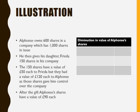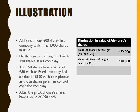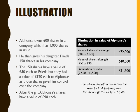We calculate how Alphonse's wealth has fallen. Before the gift, his 600 shares at £120 each totalled £72,000. After the gift, he has 450 shares now valued at £90 each, totalling £40,500. So the fall in value is £31,500 — and that is the value of the gift for inheritance tax purposes. Of course, the value of the gift to Frida is just £7,500 (150 shares at £50 each), and indeed the value of the gift for capital gains tax purposes would also be £7,500.